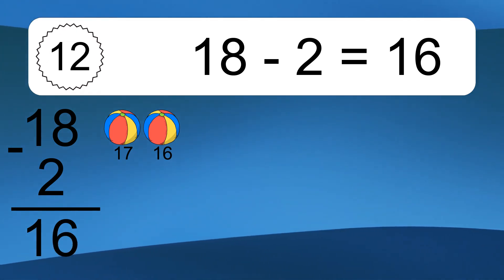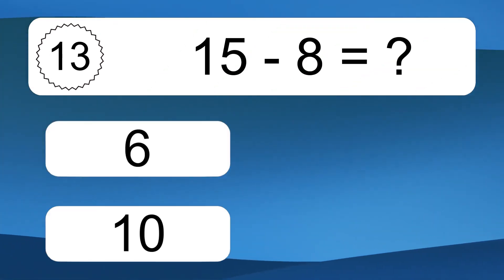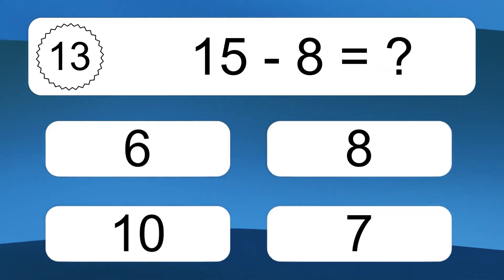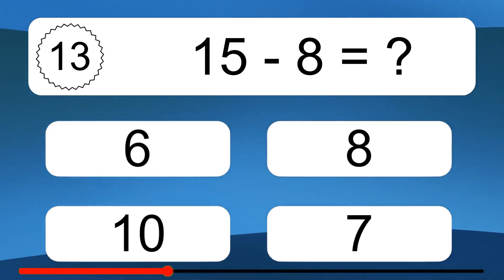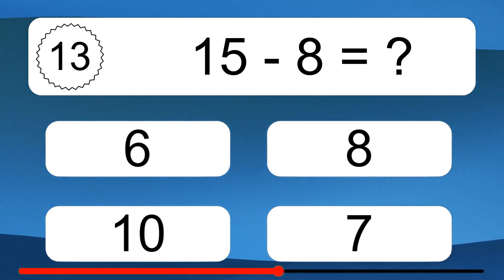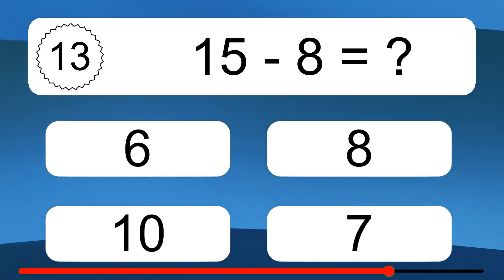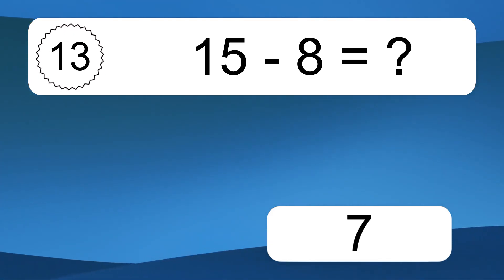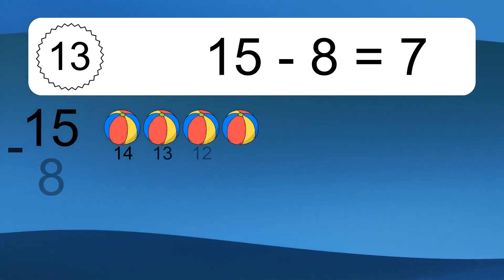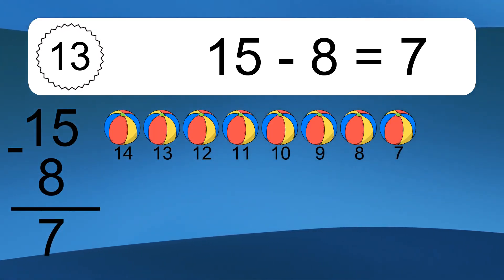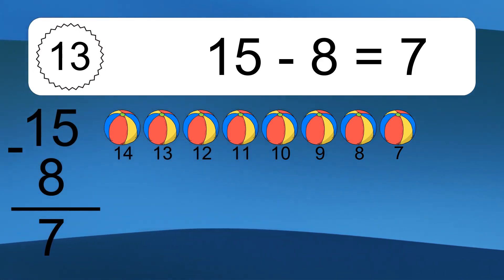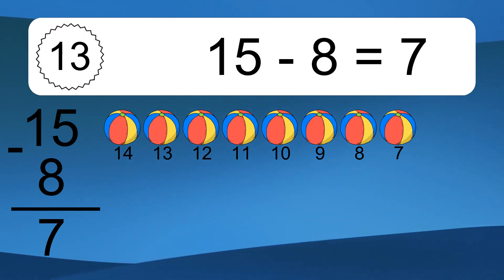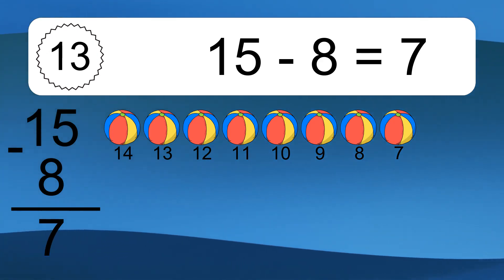18 minus 8 equals what? 18 minus 8 equals 8. Let's count it: 14, 13, 12, 11, 10, 9, 8, 7.